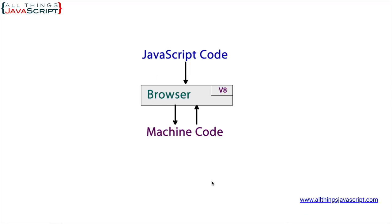Let's take a look at the first image. Here we are representing that the JavaScript code is interpreted by the browser using the V8 engine — the V8 engine is embedded as a part of the browser, and that converts it to machine code, allowing it to communicate with the CPU. In the case of Node, it's a very similar setup, but Node is a different application. It is not a browser application — it runs on the computer and incorporates the V8 engine to convert JavaScript code to machine code and thereby work with the CPU.